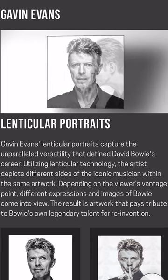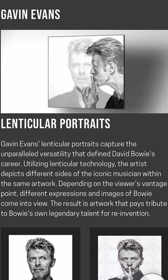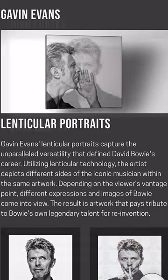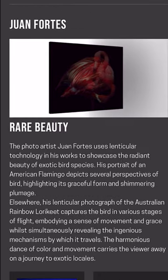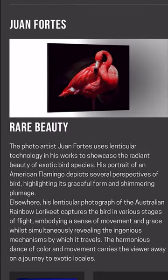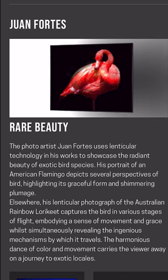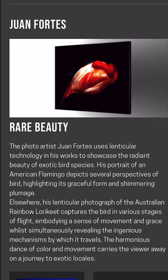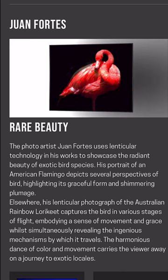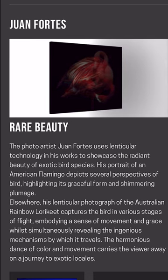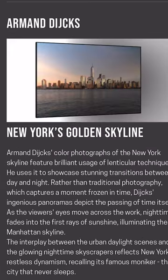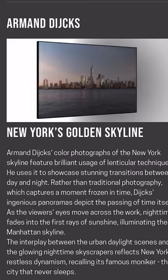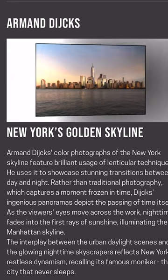A lenticular photograph is made by combining two or more images, which are printed onto a plastic sheet with a series of small lenses. The images are then interlaced into a series of thin strips to a specific angle of view. When viewed from different angles, the different strips of the images create the illusion of depth, motion, or change.